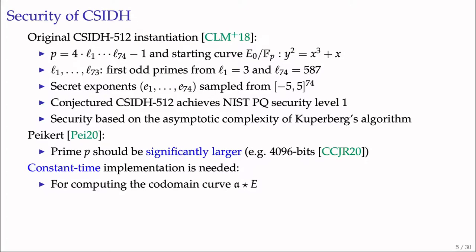The original CSIDH paper claimed CSIDH-512 would achieve NIST PQ security level 1. However, the concrete security of CSIDH is under debate. For example, Peikert estimates the prime p should be significantly larger to meet NIST security level 1. In addition, for real-world applications, constant-time implementations are needed.